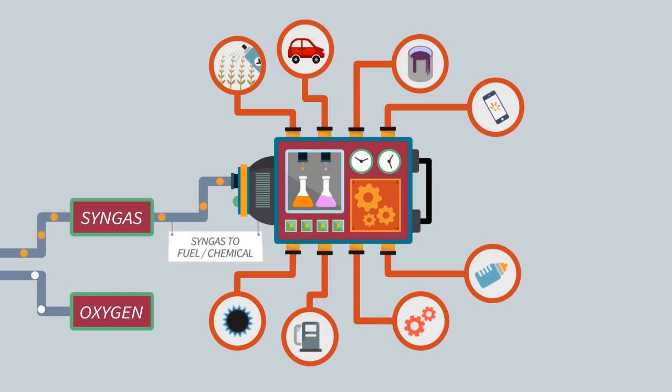The syngas is then further transformed using available technologies into useful products such as gasoline or diesel, plastics used in televisions and cell phones, or fertilizers to help crops grow.